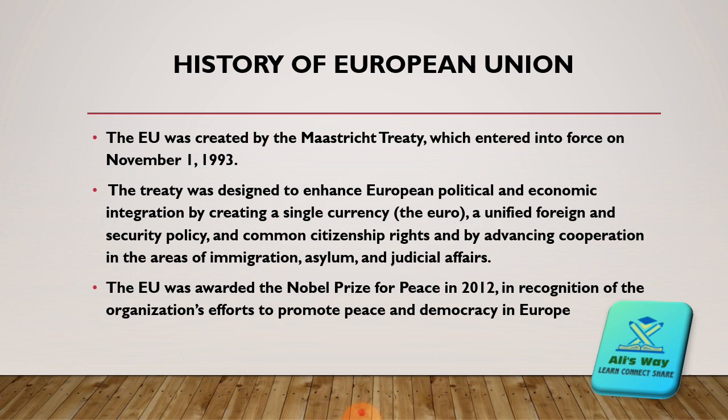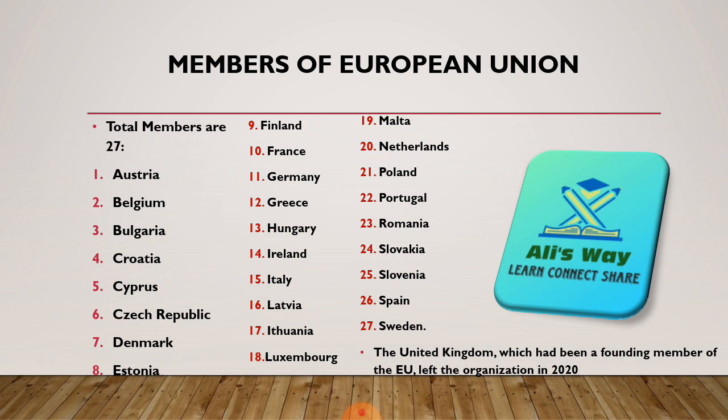That was a short history of the European Union. Now, we are going to discuss the members of the EU. There are a total of 27 members, which are listed on screen — you can read them all. Before 2020, the members of the European Union were 28 in number. The United Kingdom left the organization in 2020, reducing the total membership to 27. Now, moving to the objectives of the European Union.